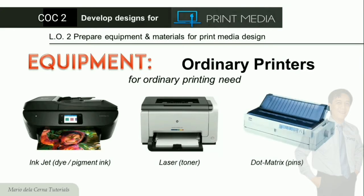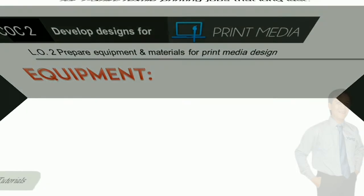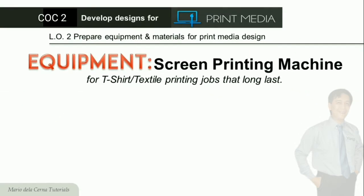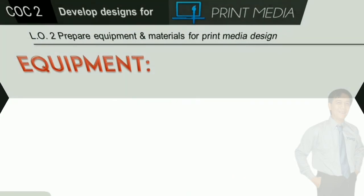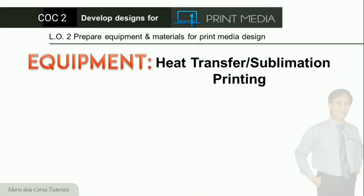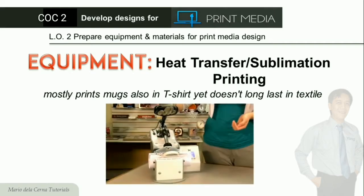Kung mag-print na may duplicate o triplicate tulad ng resibo, dot matrix ang gamitin dahil nagpi-print ito sa pamamagitan ng pins at ribbon. Kung ang pagprinta ng t-shirt o tela, wala nang tatalo pa sa screen printing — masisira na lang ang damit, di pa matanggal ang print nito. Kung mag-print naman gamit ang heat transfer o sublimation, maaari din itong gamitin sa t-shirt printing ngunit hindi magtatagal ang decal paper nito.